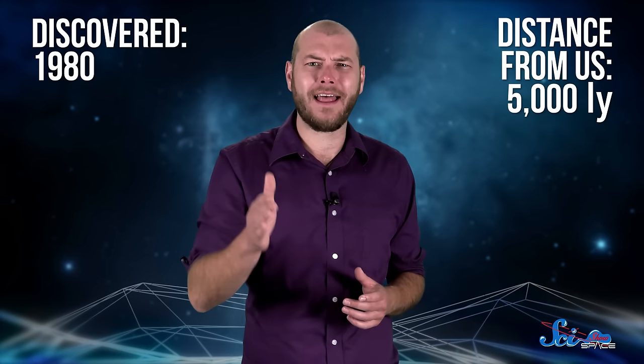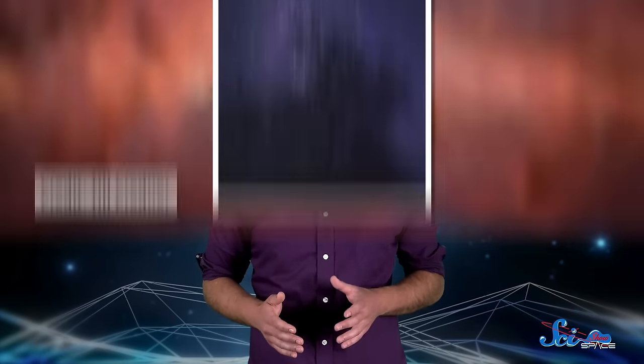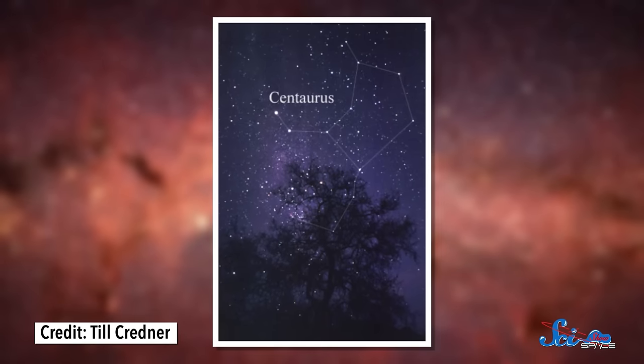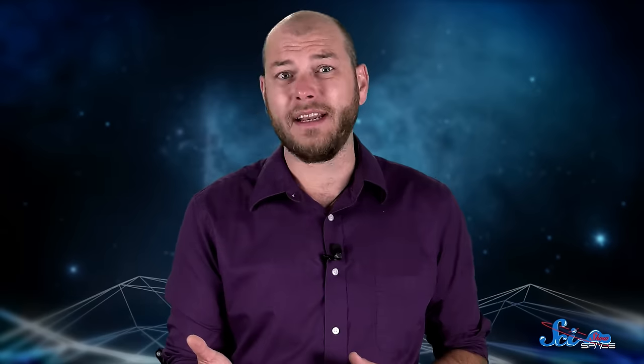The Boomerang Nebula was first observed in 1980 by an Australian team of astronomers using a big ground-based telescope. But it's pretty far away from us, about 5,000 light-years in the direction of the constellation Centaurus. All the astronomers could really see was a lopsided shape, and they decided it kind of looked like a boomerang, which is how the nebula got its name.